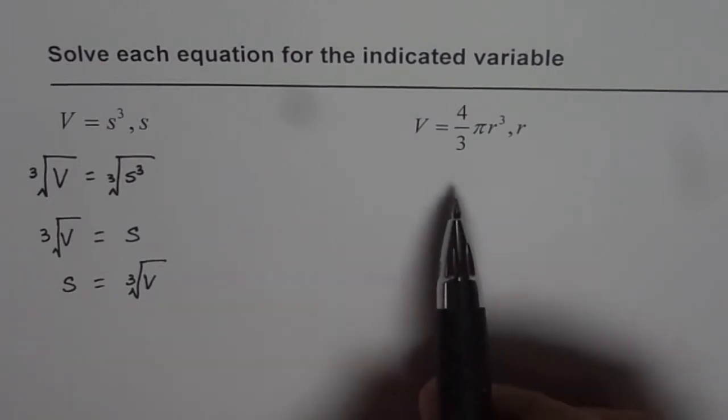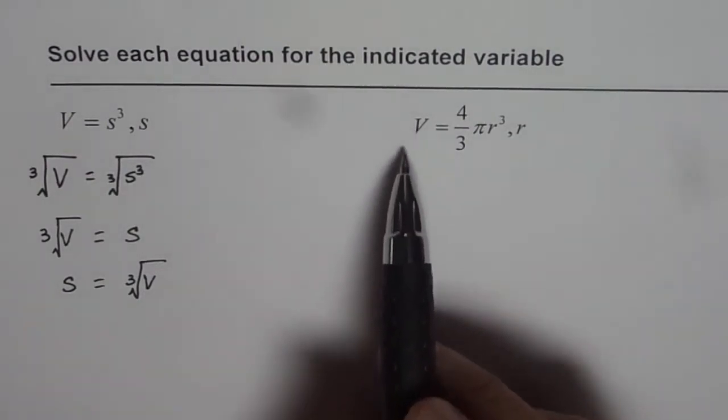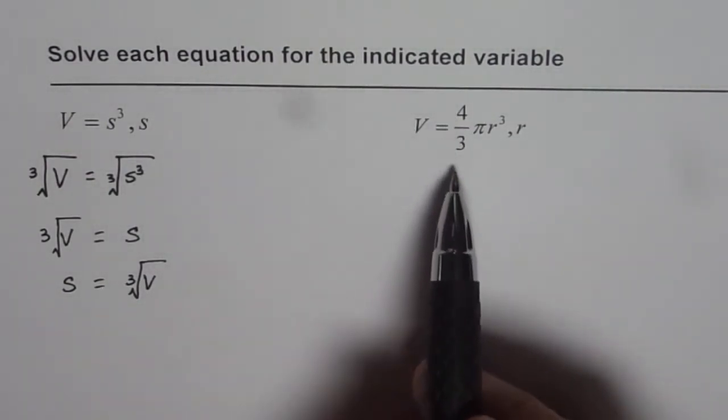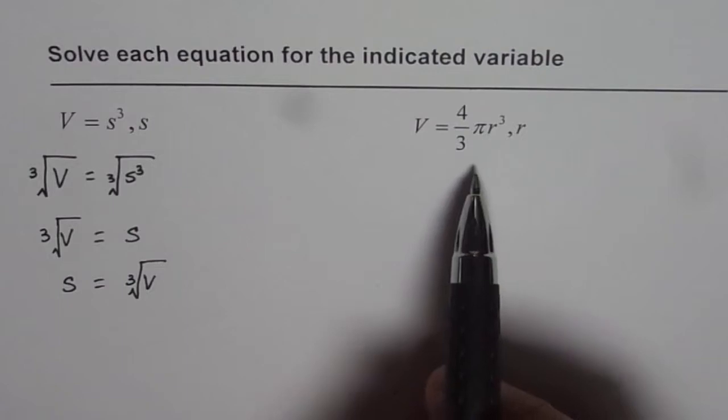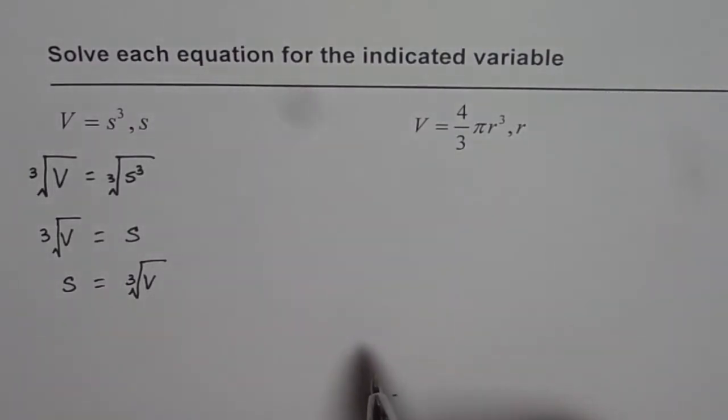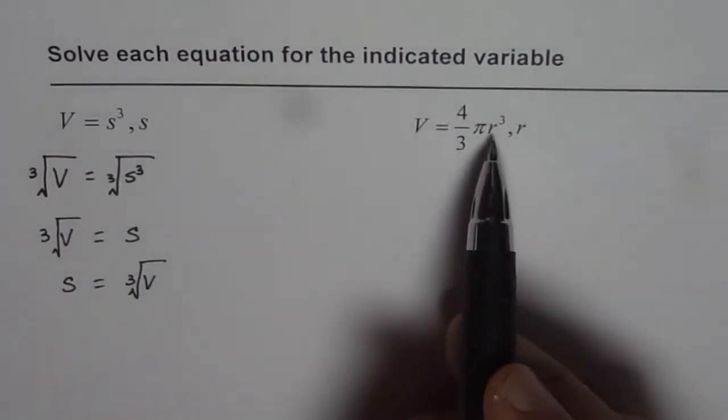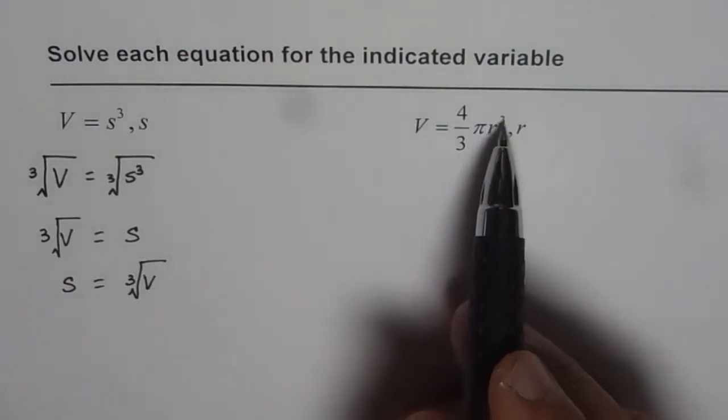Now let us look at another example where we have the cube of radius. Here volume V equals 4/3 π R³ and we need to isolate for R. This is an example of a sphere where R is the radius and V is the volume. To isolate for R³...